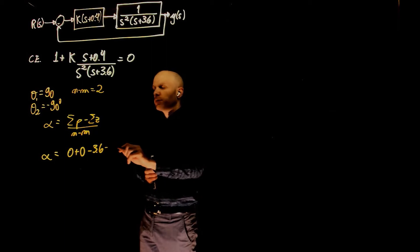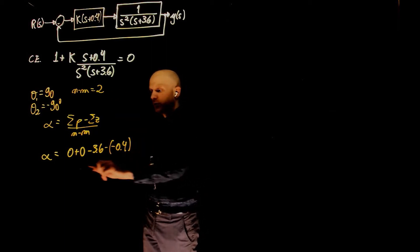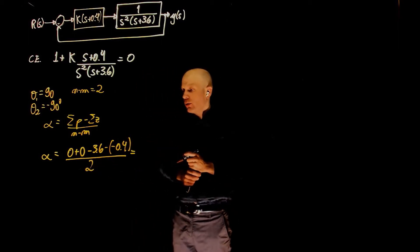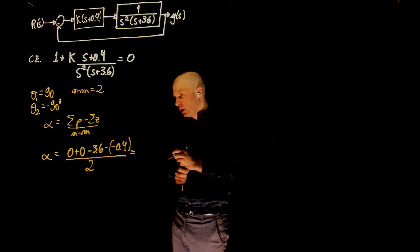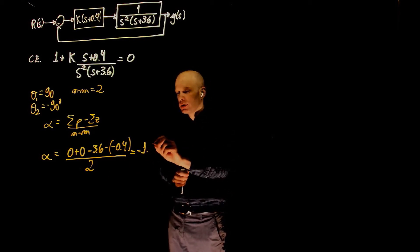and zeros we have negative 0.4, divided by 2. Here we have negative 3.6 plus 0.4. That's negative 3.2 divided by 2 is negative 1.6.